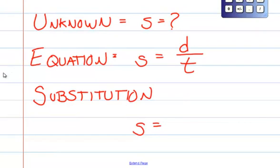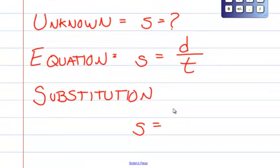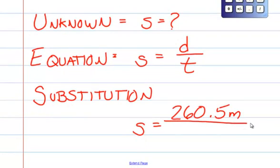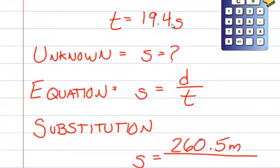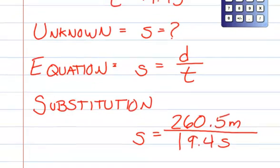What is D equal to? We knew from up above 260.5 meters. So that's what I'm going to write down. D is 260.5 meters. T was equal to 19.4 seconds.